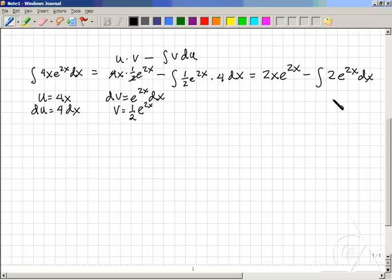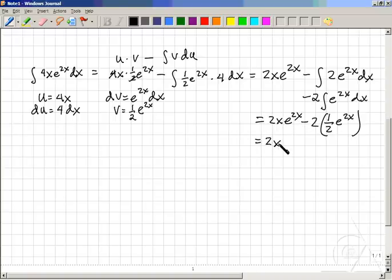Again, we see a 2 here in the integral that can come out as a constant, so minus twice the integral of e to the 2x. The anti-derivative of e to the 2x would need to be 1 half e to the 2x, since its derivative would bring a 2 in front canceling with the 1 half. This leaves 2x e to the 2x minus 1 e to the 2x.